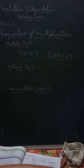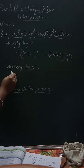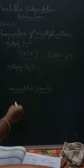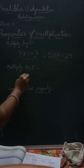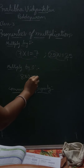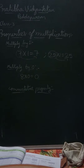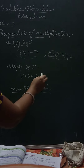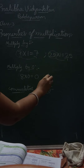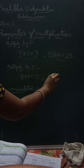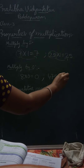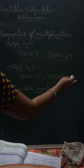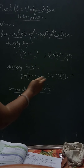The next property is multiply by 0. When you multiply any number with 0, we always get the answer 0. Suppose we take 475 multiply with 0 — the answer is 0, because we are multiplying with 0.